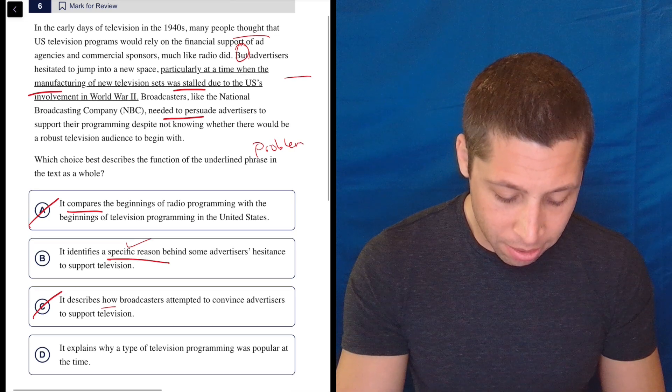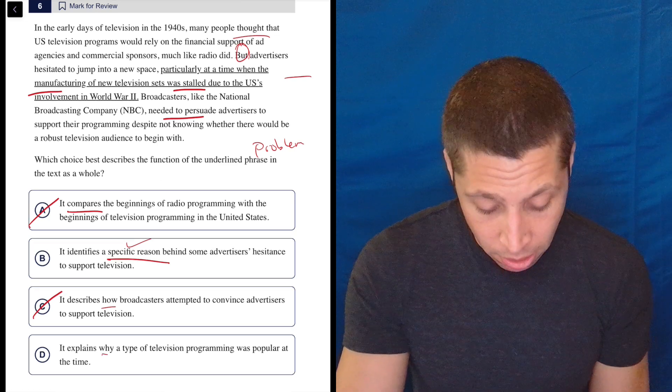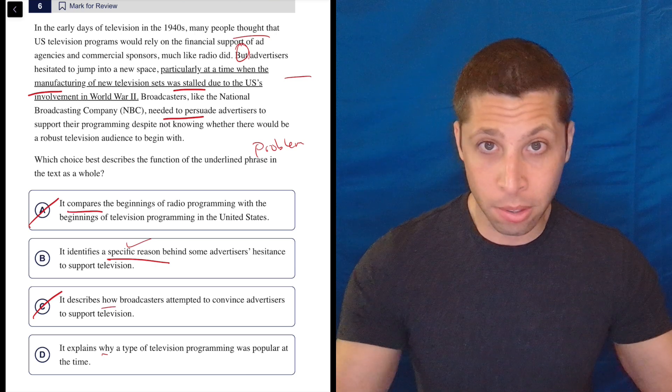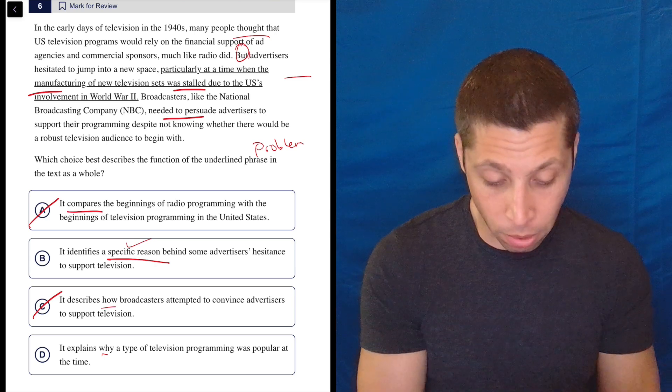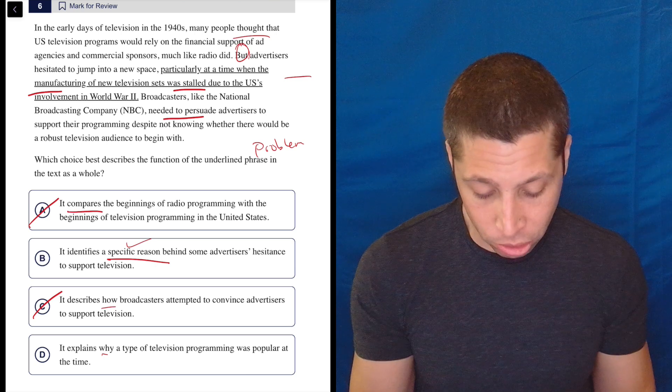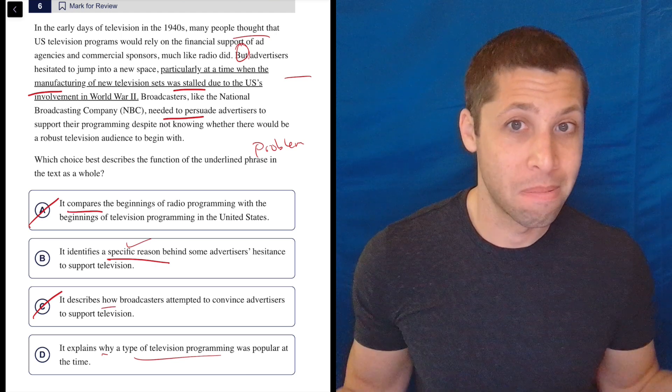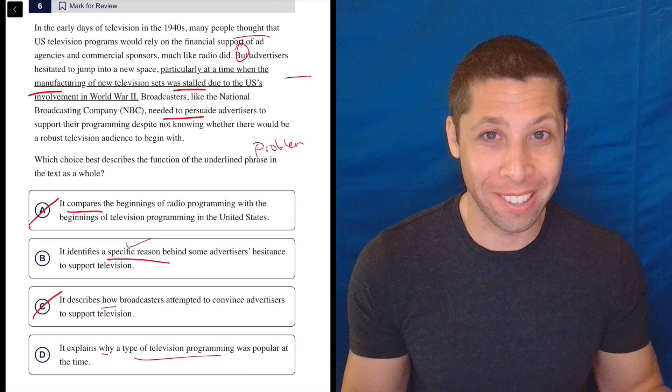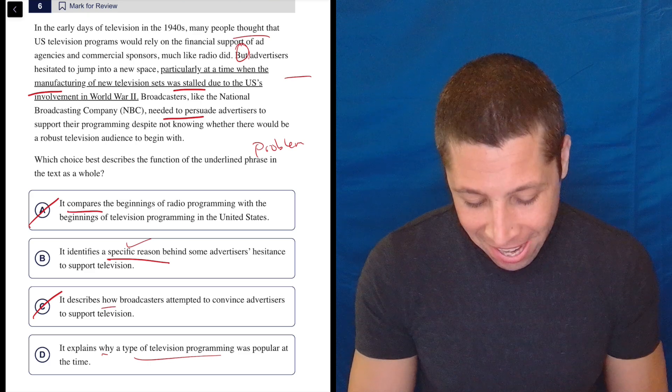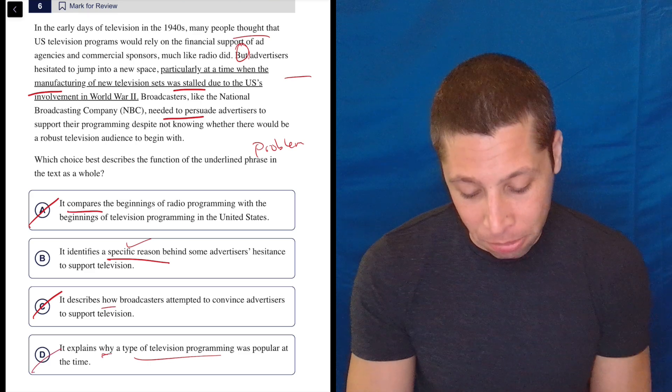D, it explains why a type of television programming was popular at the time. Why was this particular thing popular? Well, first of all, let's even back up the question. What type of television programming was popular? I don't know. It doesn't seem like anything, right? The whole point is World War II. They don't have TVs. So this has got a bunch of problems.